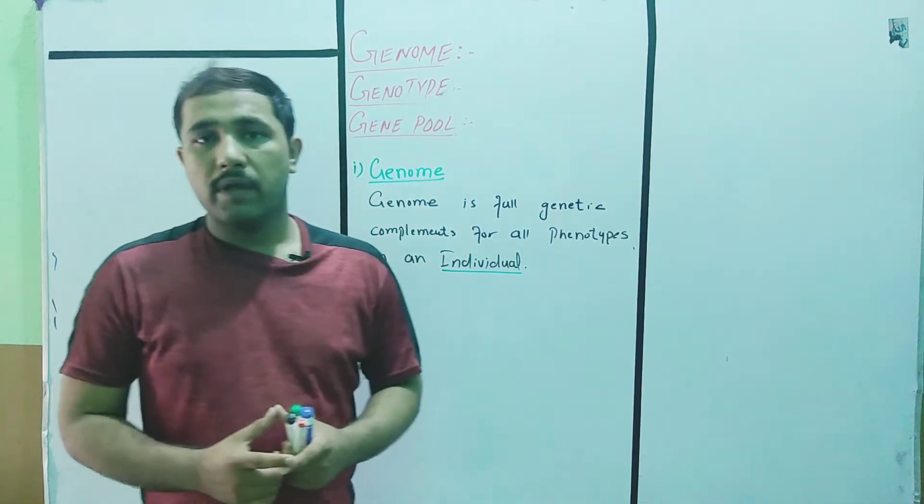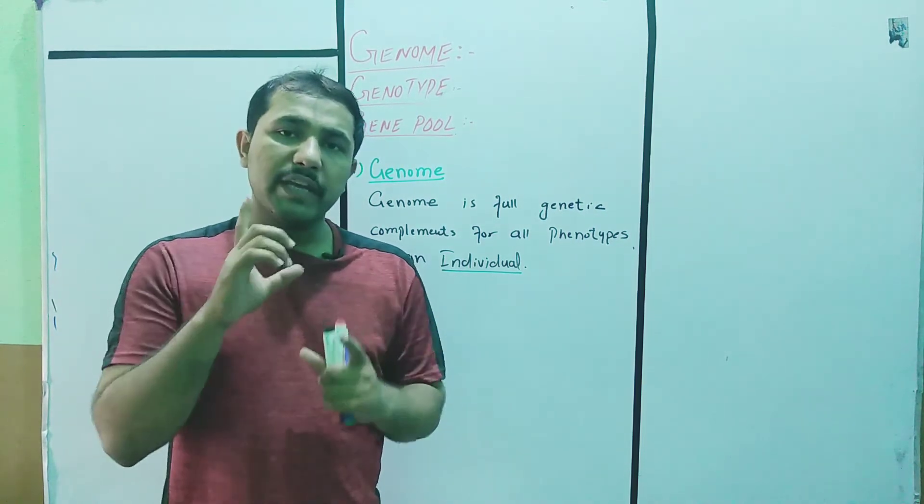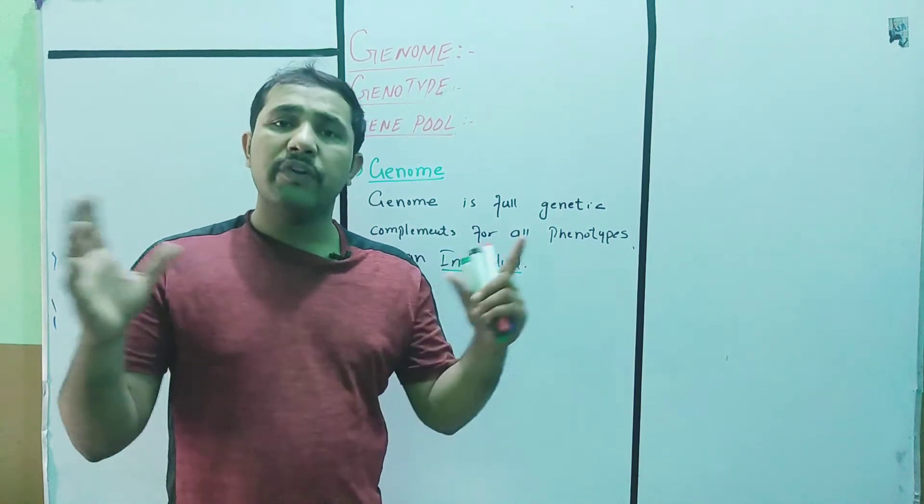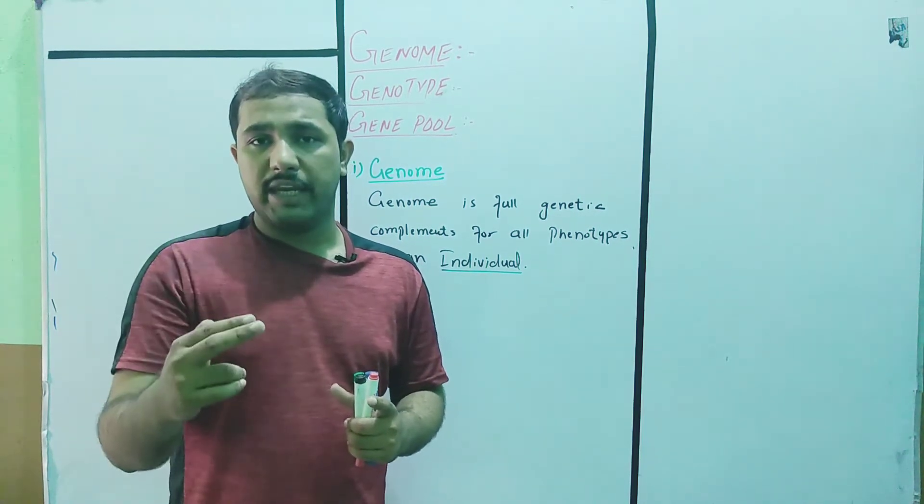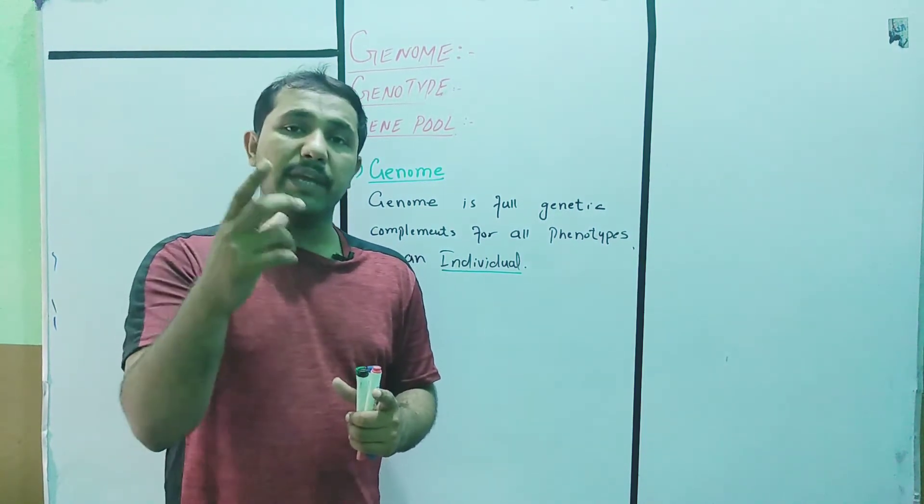First one is genome. The genetic complement of an individual. All the traits in an individual that are controlled by its DNA or chromosome make its genome.